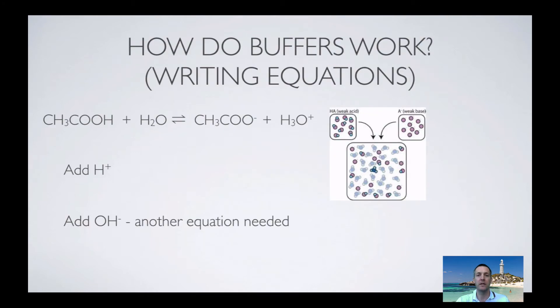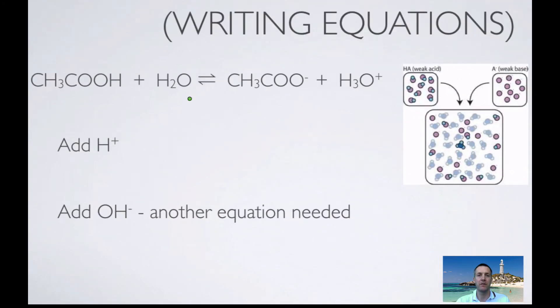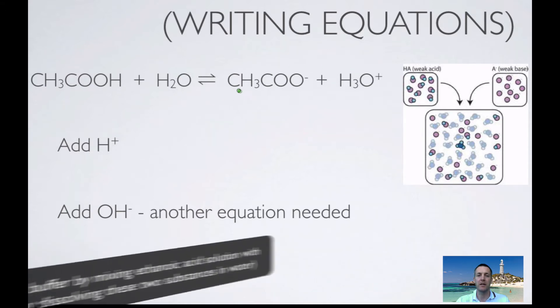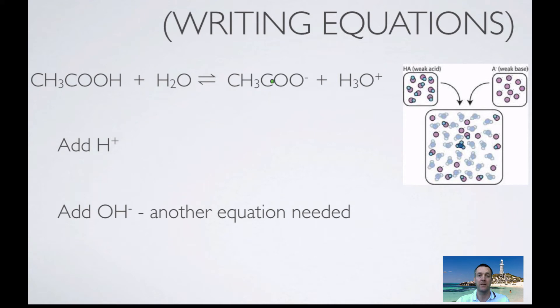Let's see how we would explain how they're able to do their job. Now we'll kind of start off by focusing on a buffer like the one we've just seen, so that is one that contains ethanoic acid and ethanoate ions. Absolutely key to answering questions like these is making sure that you can write an equilibrium that involves that conjugate pair. Here we've got ethanoic acid reacting with water, producing ethanoate ions and H3O+ ions.